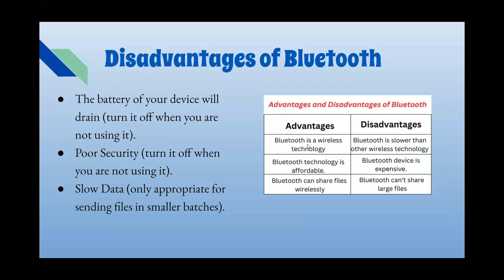Here's a little chart about the advantages and disadvantages. Advantages: Bluetooth is a wireless technology, it's affordable — actually it's free and already downloaded on your phone — and it can share files wirelessly. Disadvantages: it's slower than other wireless technologies, some Bluetooth devices can be expensive, and it cannot share large files easily.